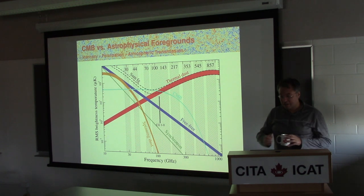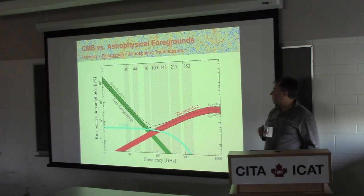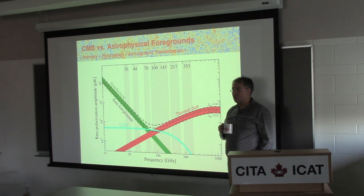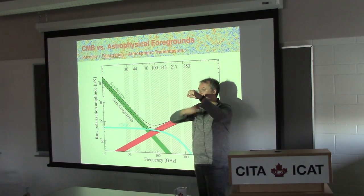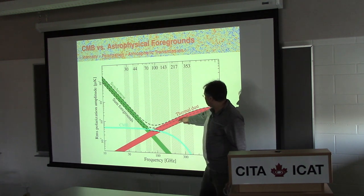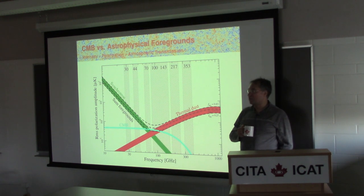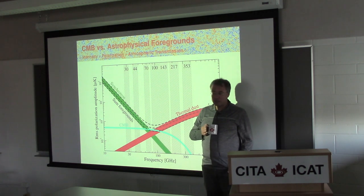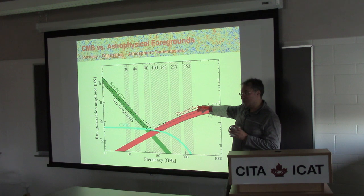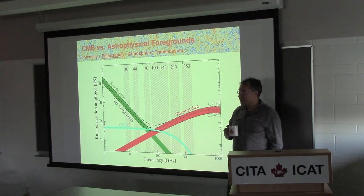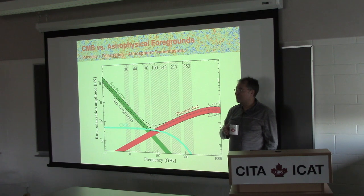It gets worse when you look at polarization. Most of the stuff in intensity is not strongly polarized, but two of them are polarized. One everybody knew was polarized, and the other was a surprise. Everybody knows synchrotron is polarized because you go around on a plane - there's a preferred direction. But thermal dust turned out to be quite a bit more polarized than people thought - about 20% polarization fraction as opposed to a few percent. The hope was to find a window on the sky at high galactic latitude with not much of these around, but it didn't pan out.